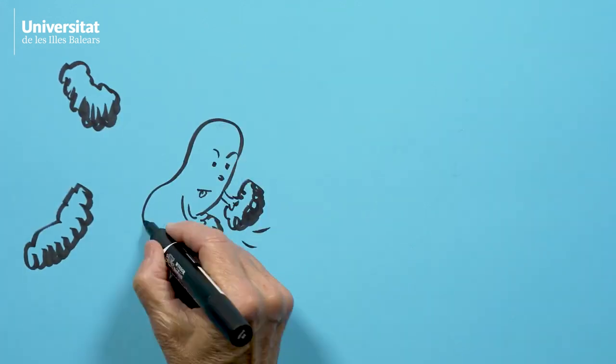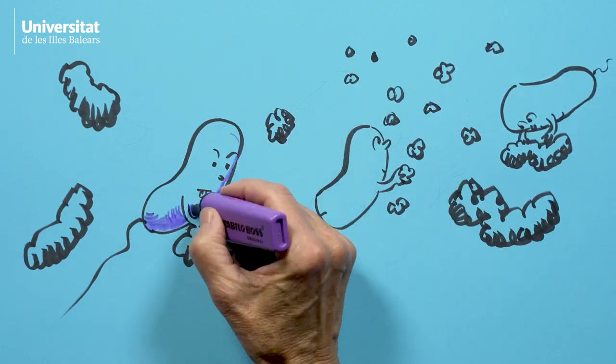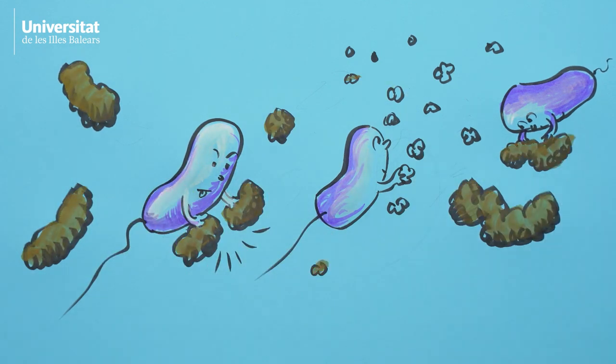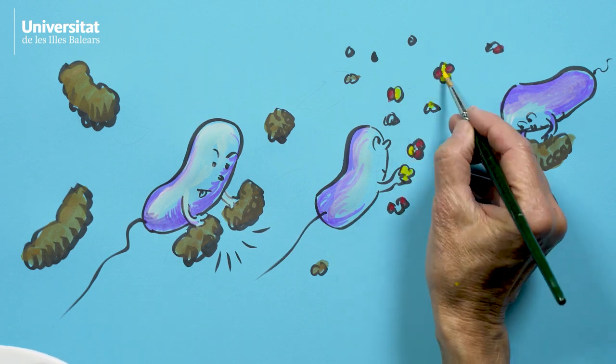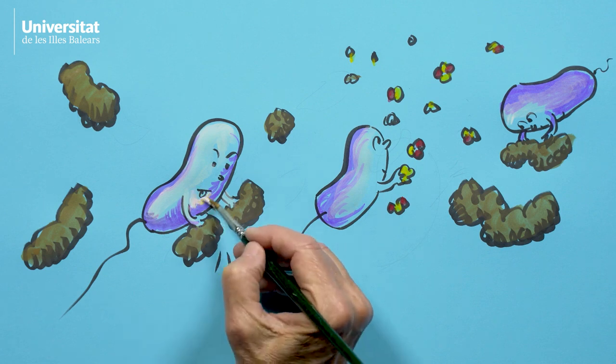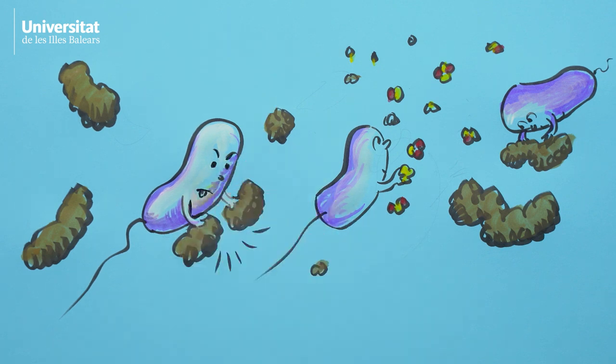These bacteria are not photosynthetic, and they don't make their own food. Instead, along with other microbes, they take apart the falling bits of trash and absorb what they need. There's a lot left over, and now it's in the form of small molecules that are exactly what the phytoplankton higher up need in order to grow. So microorganisms create an excellent compost bin right there in the ocean.